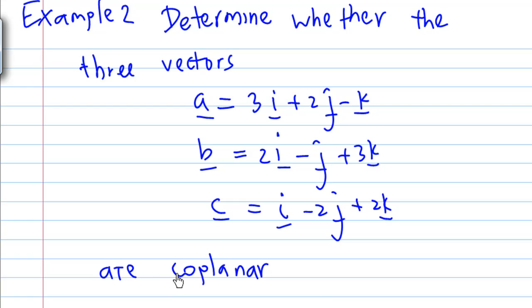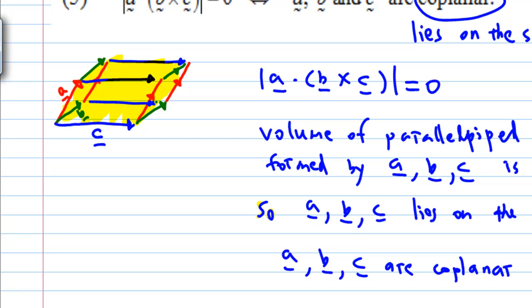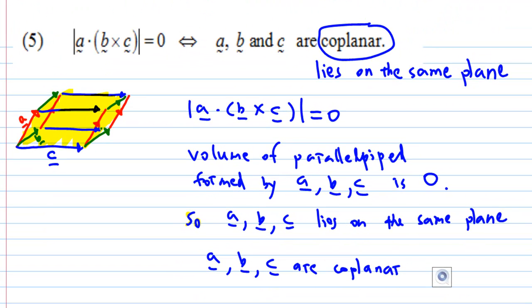First, what is the meaning of coplanar? Recall, when we talk about properties of scalar triple product, a, b, c are coplanar means they lie on the same plane—there is a plane containing a, b, c.